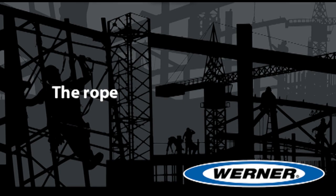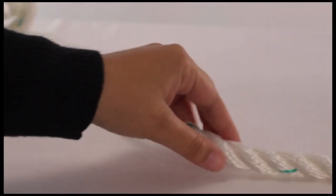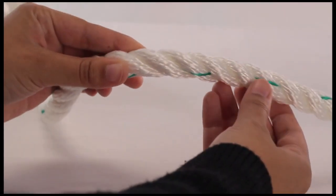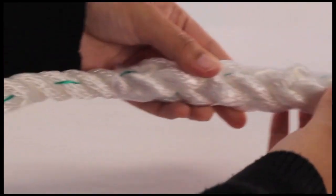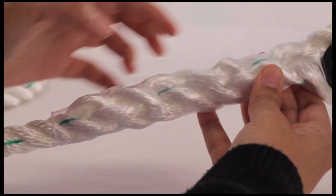The Rope. Inspect the lifeline for concentrated wear. The lifeline should be free of frayed strands, broken yarns, cuts, abrasions, burns, and discoloration.